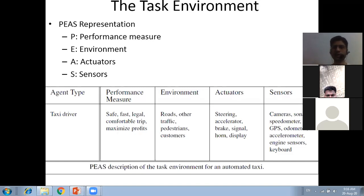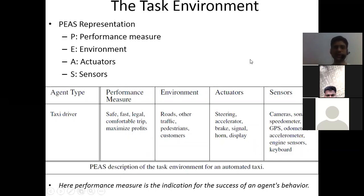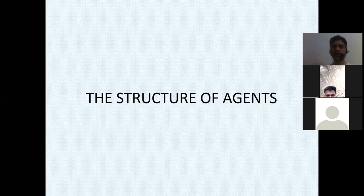These are the task environment components for an automated taxi: performance measure, environment, actuators, and sensors. Performance measure is the indication of the success of an agent's behavior — for a taxi driver, success depends on driving safely, fast, legally, comfortably, and maximizing profit. Now let's look at the structure of agents — what are the components of an agent and how does an agent work?